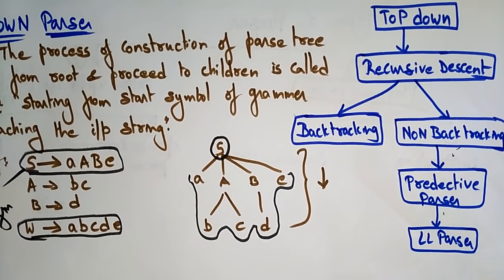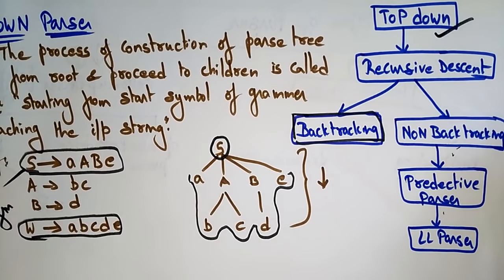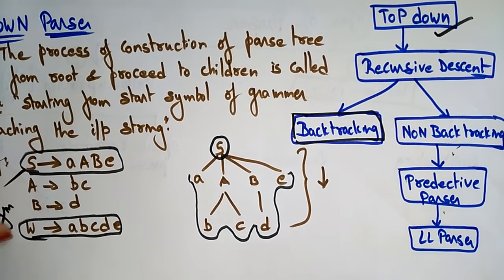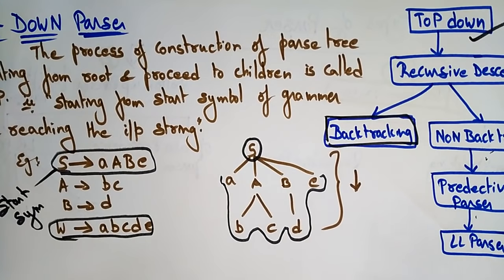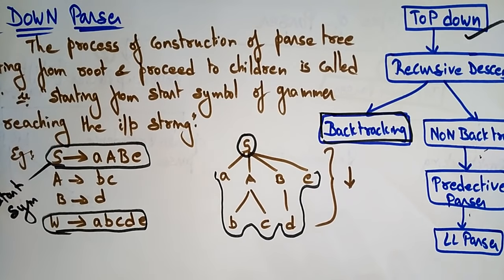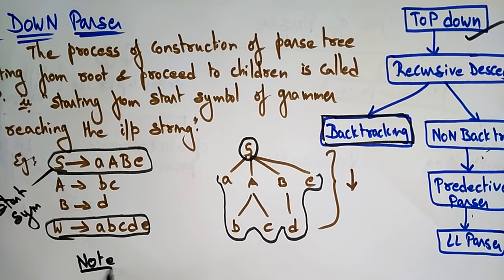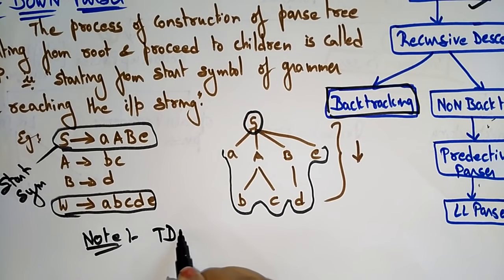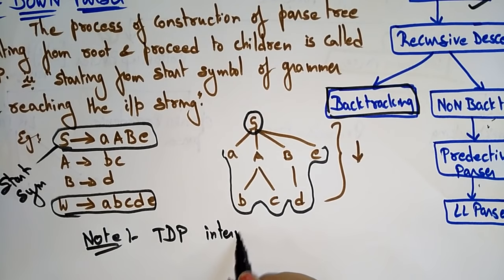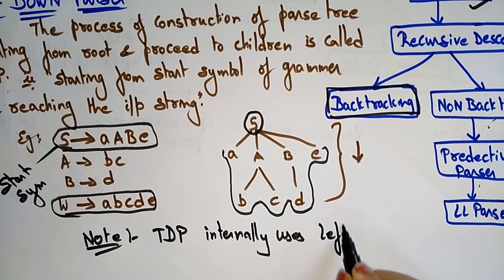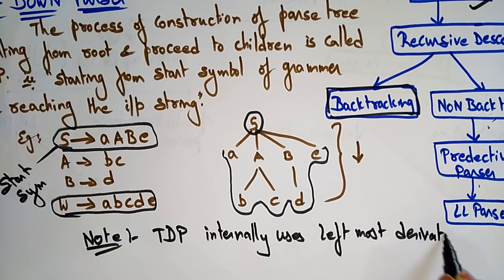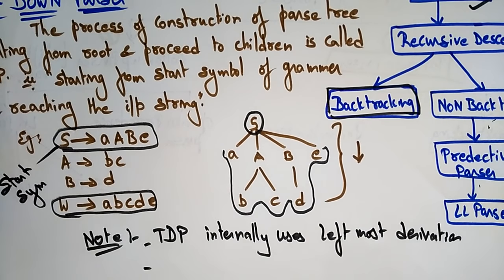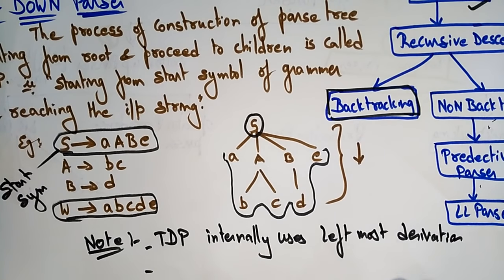In this section we are discussing the top-down parser with backtracking. An important point to note is that the top-down parser internally uses leftmost derivation. Let's discuss the top-down parser clearly with brief points, and later we will see backtracking. The top-down parser internally uses leftmost derivation.